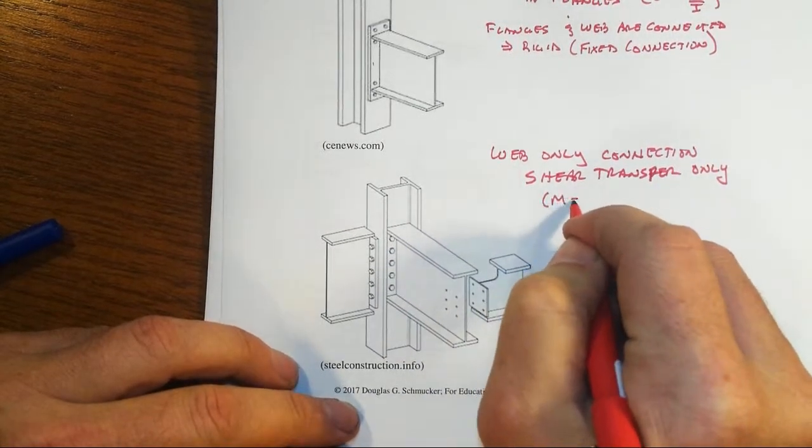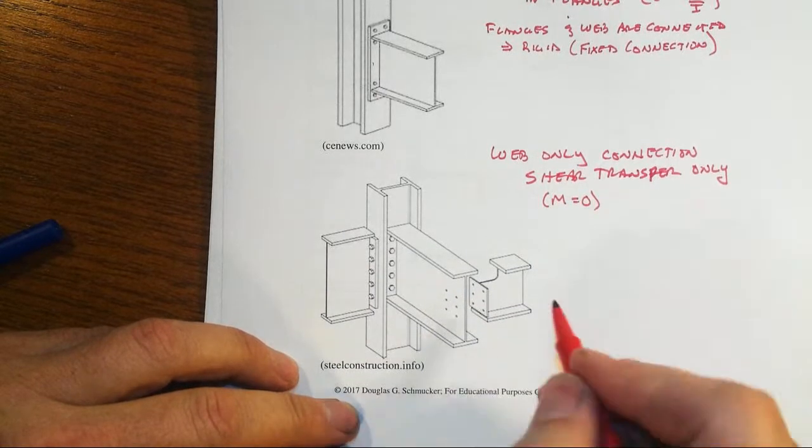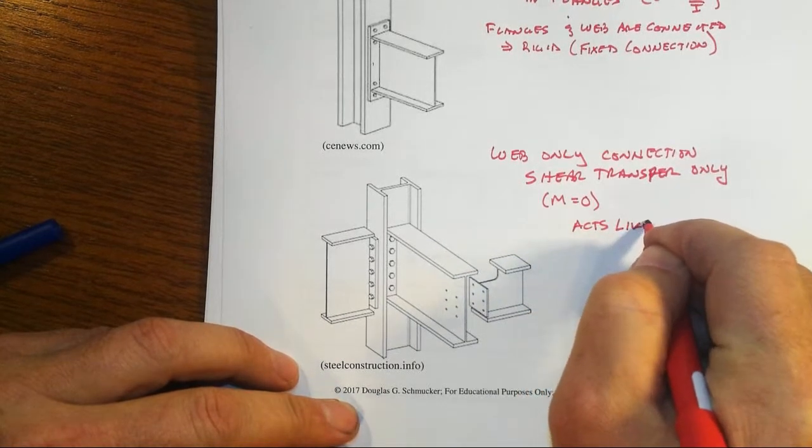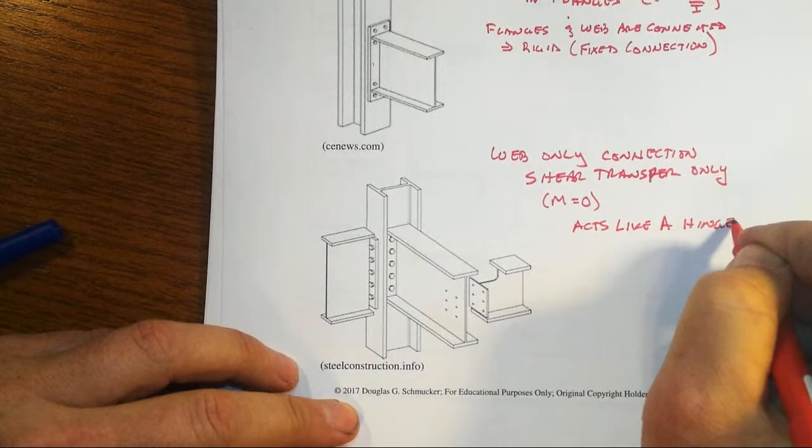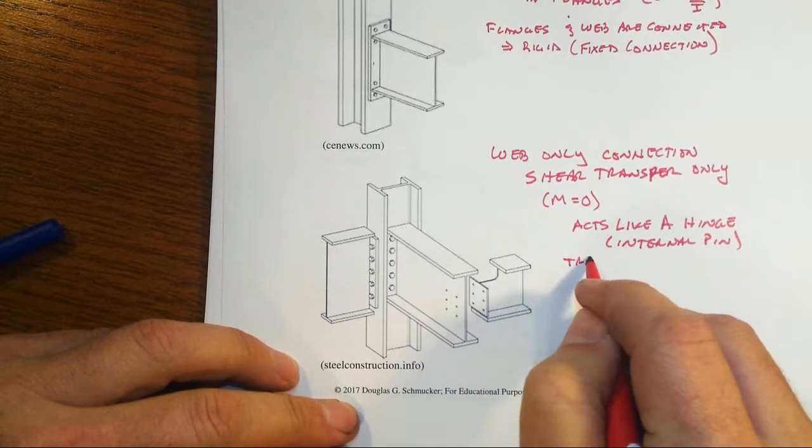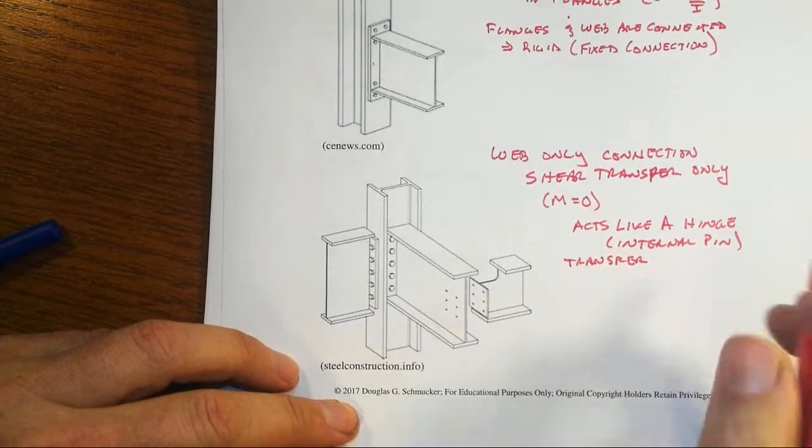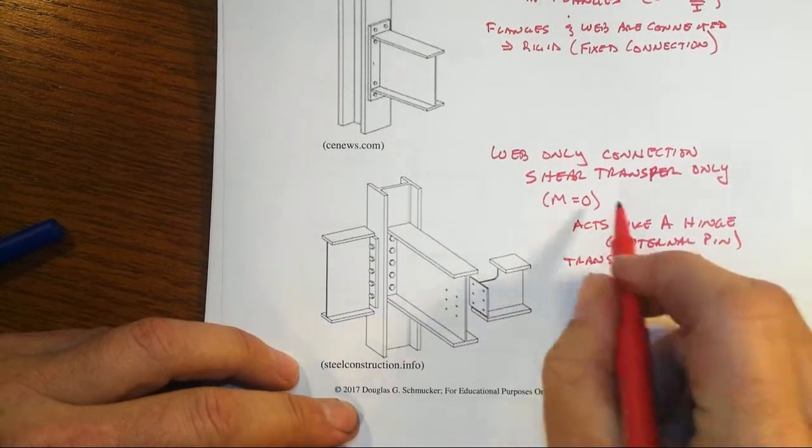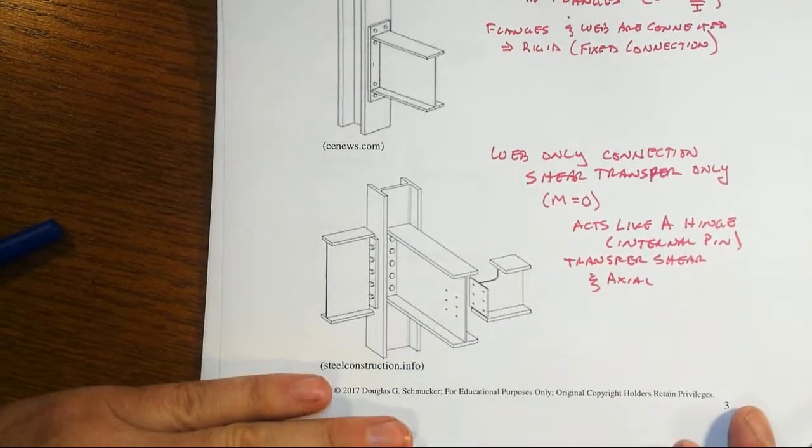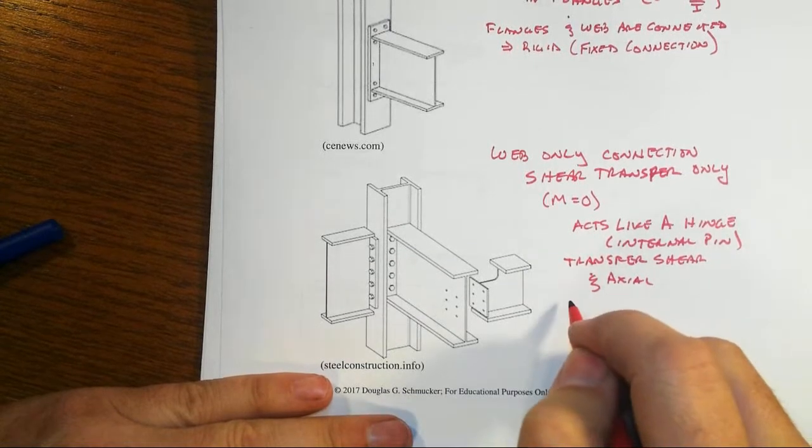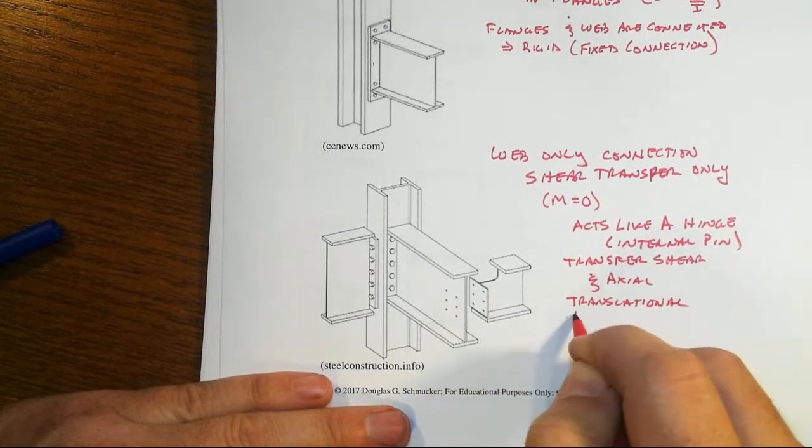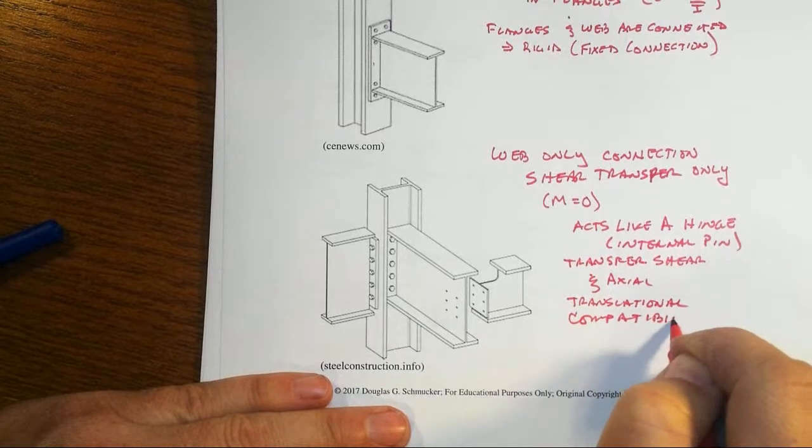Shear transfer only, so that means that the moment will end up being zero in this connection. Because this thing is allowed to, in a sense, act like a hinge or an internal pin. It can transfer shear and axial only. I already said shear transfer only, but transfer shear and axial.